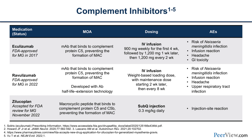Zilucoplan binds to complement protein C5 but also C5b, so if any complement gets dissociated — C5 to C5a and C5b — it has a second chance of capturing C5b and again inhibits the formation of the membrane attack complex. This is not intravenously administered; it is given by daily subcutaneous injections of a very small volume and is extremely well tolerated.